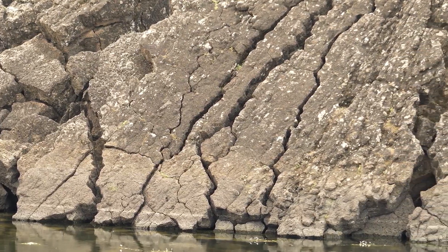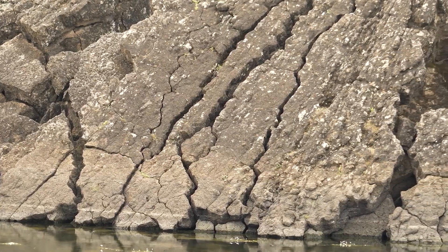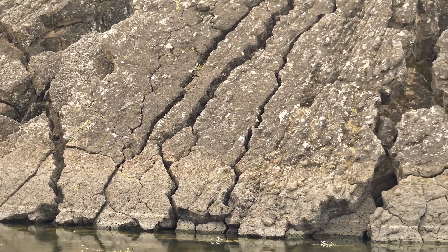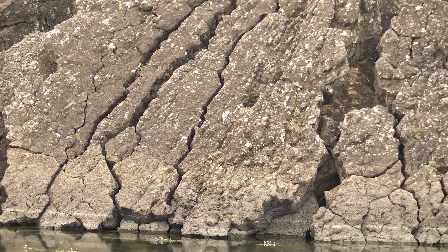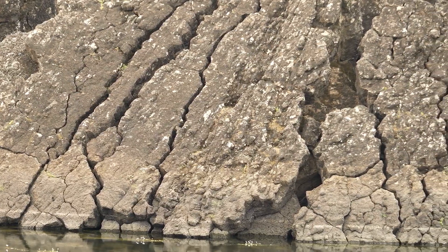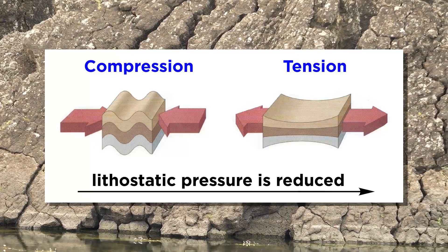It is common for a geologic formation to form regularly spaced sets of joints as it is being uplifted to the surface, and the stress field changes from a state of horizontal compression to horizontal tension as the lithostatic pressure, or pressure from surrounding rocks, is reduced.